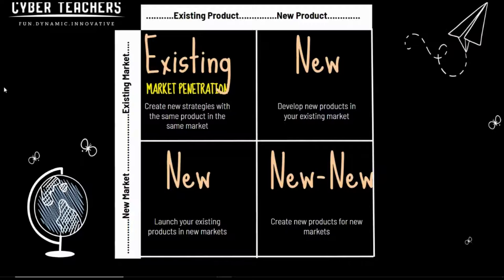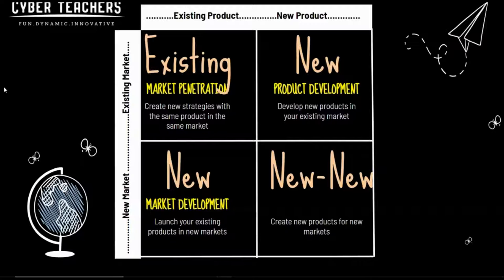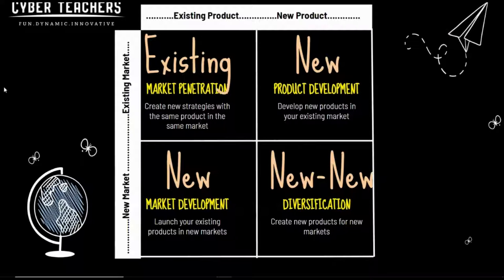If you decide to launch a new product in your existing market, it is called product development. From there we move to the bottom left — market development — where we take our existing products into a new market, which could be a new geographical area, a new industry, or a new business sector. The bottom right-hand corner is what I refer to as 'new new' — that's diversification — high risk because we are taking a new product into a new market.